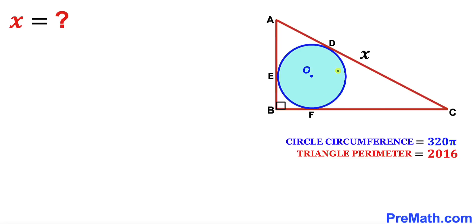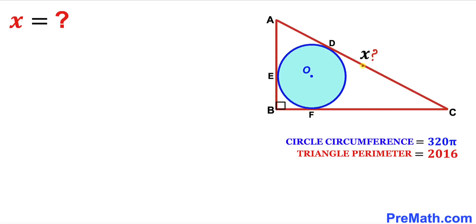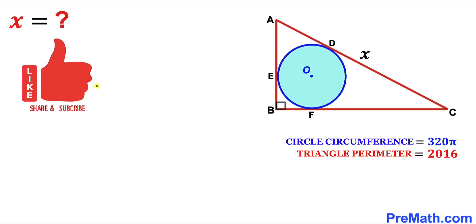Welcome to pre-math. In this video we have a blue circle with center O fully inscribed in a right triangle ABC, such that the circumference of the blue circle is 320π, and the perimeter of triangle ABC is 2016. The side length AC is represented by x units, and points D, E, and F are the points of tangency. Our task is to find the value of side length x.